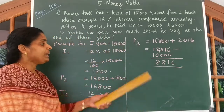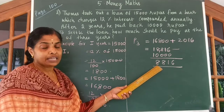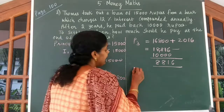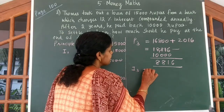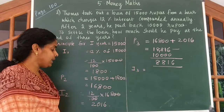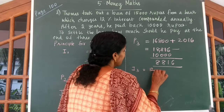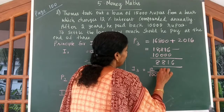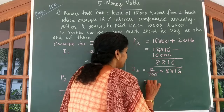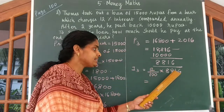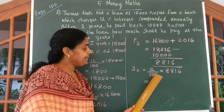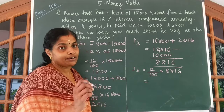Now, only for this remaining amount he will have to pay interest. I3 is the interest for the third year. I3 = 12 by 100 of ₹8,816. Here you cannot cancel the terms, so multiply these two numbers and divide by 100.